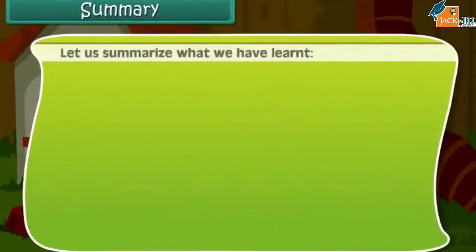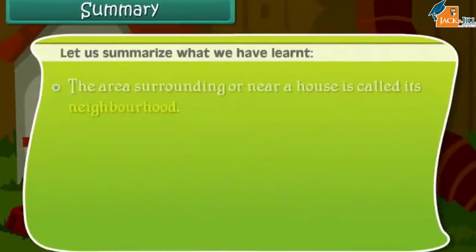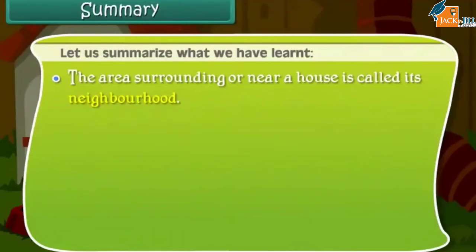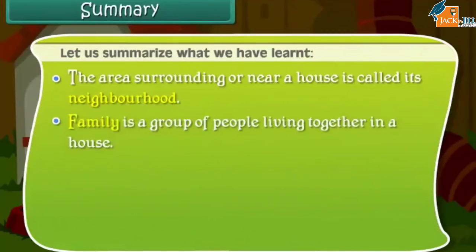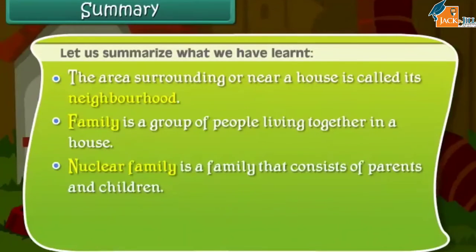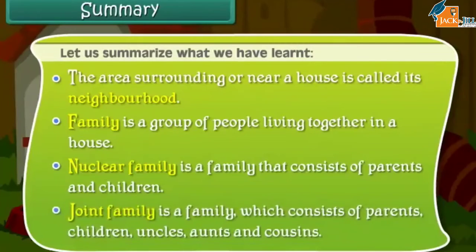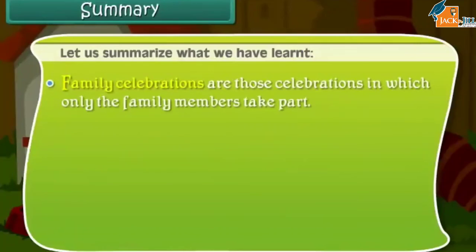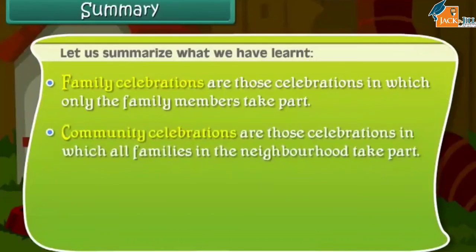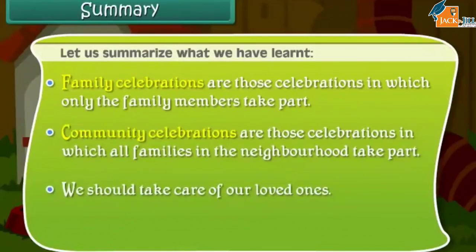To summarize: The area surrounding or near a house is called its neighborhood. Family is a group of people living together in a house. A nuclear family consists of parents and children. A joint family consists of parents, children, uncles, aunts, and cousins. Family celebrations are those in which only family members take part. Community celebrations are those in which all families in the neighborhood take part. We should take care of our loved ones.